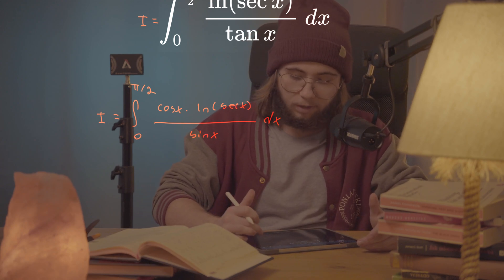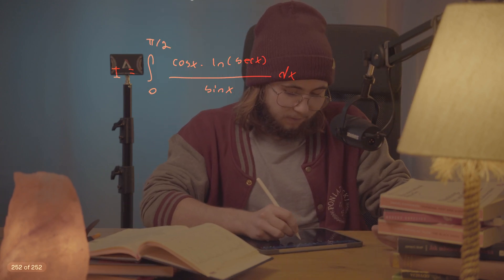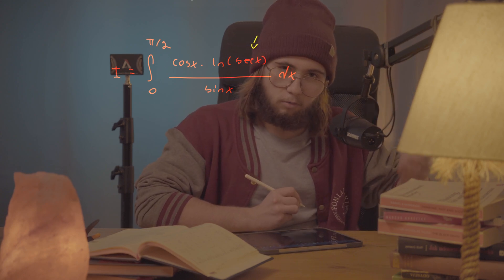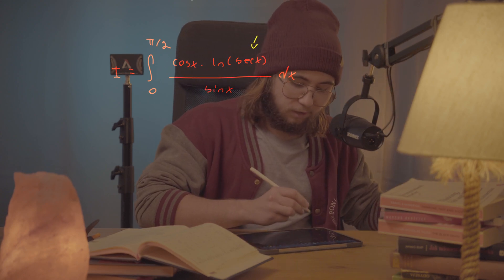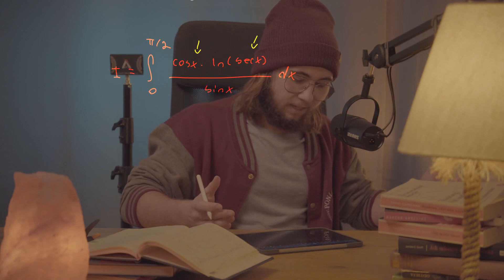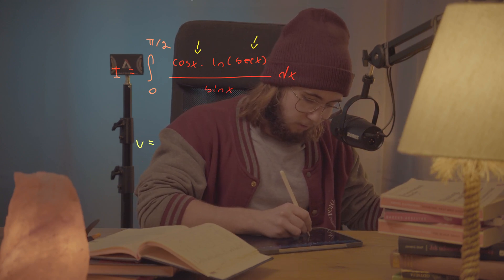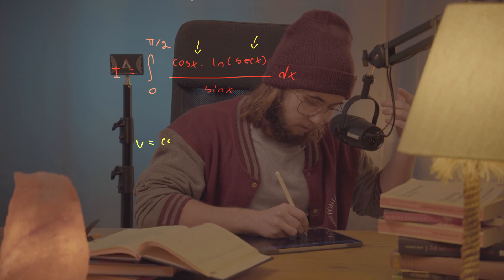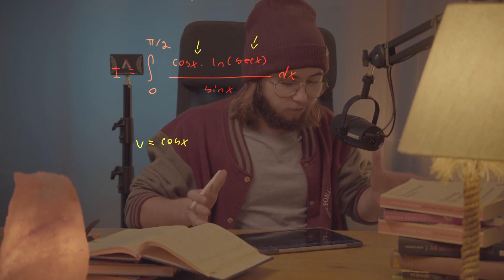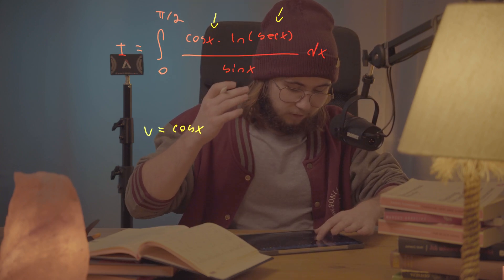Now it's time for a u-substitution. I want to make this substitution because the secant inside the natural log is one over cosine, so I have cosine times the natural log of one over cosine. Setting u equal to cosine of x seems like it will give something interesting.